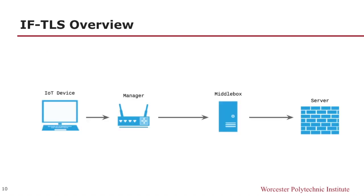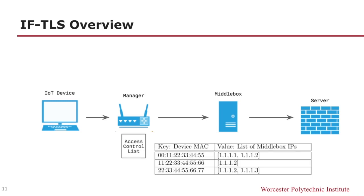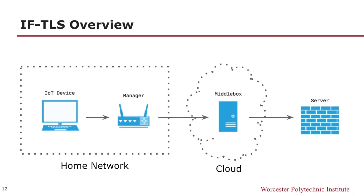Before discussing our core technical approach, I will go over a summary of how IFTLS works. IFTLS gives users the ability to redirect their IoT device traffic through designated middleboxes with the help of an IFTLS manager. The manager routes the IoT device's traffic based on a user-provided access control list, or ACL. This dictionary maps IoT device MAC addresses to the middlebox or middleboxes that will examine its traffic. More concretely, the keys are IoT MAC addresses and the values are a list of middlebox IPs. This diagram represents the second device on the ACL since its traffic is only being redirected to one middlebox.